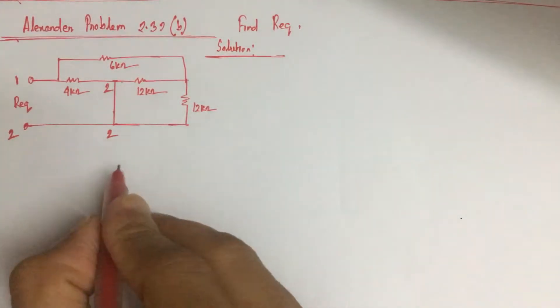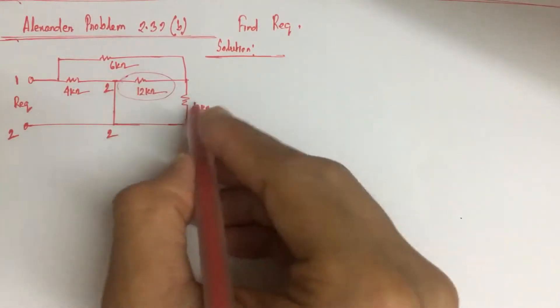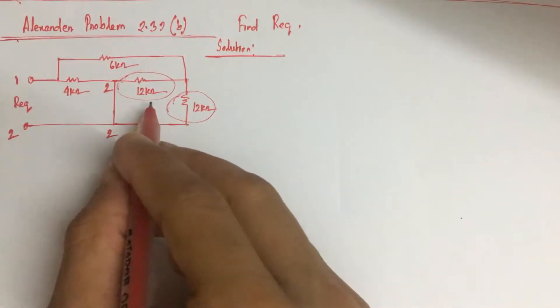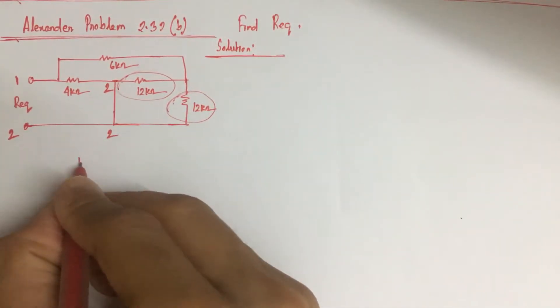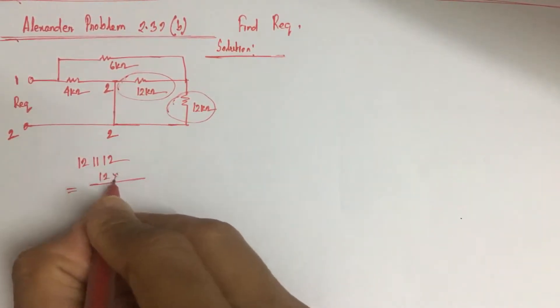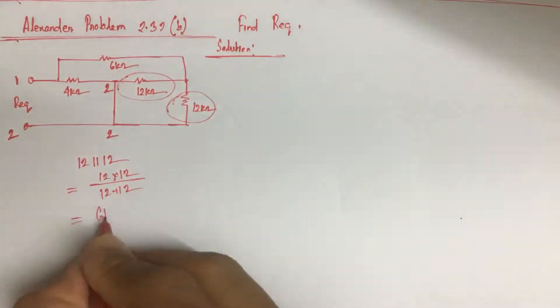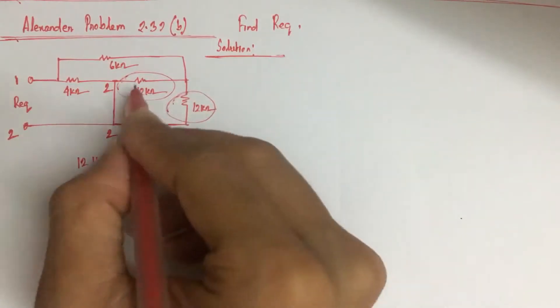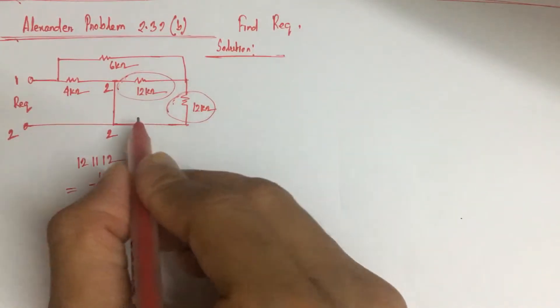Here, this 12 kohm resistance and 12 kohm resistance are in parallel. So two equal 12 kohm resistances can be replaced by 12 divided by 2, which equals 6 kohm. So these two parallel resistances can be replaced by a resistance of 6 kohm.